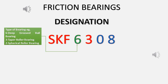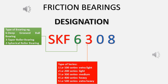The first digit after the letters refers to the type of bearing. For example, the digit 6 refers to deep groove ball bearing. If we had the number 3 in its place, then it would refer to taper roller bearing. Similarly, if it was 2 in place of 6, it would refer to spherical roller bearing.